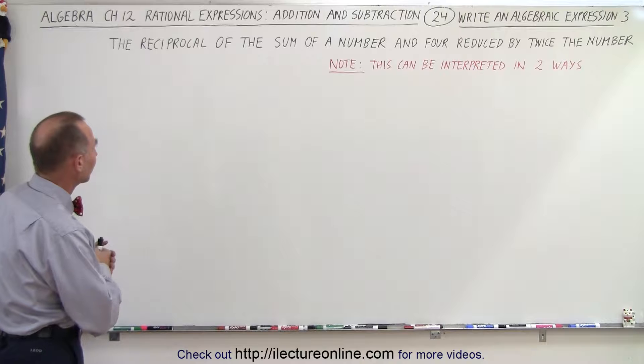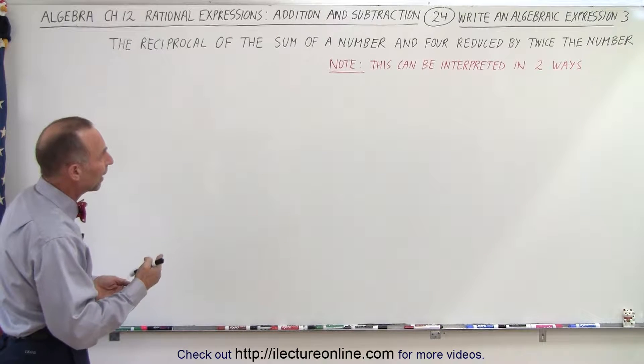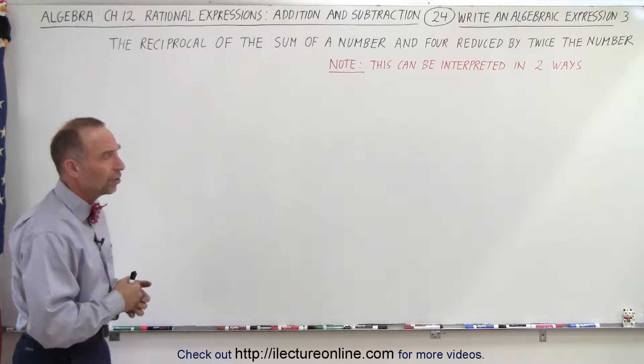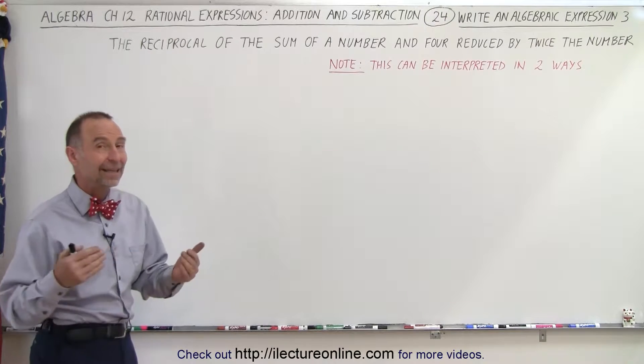In this case we have the following sentence: the reciprocal of the sum of a number and four reduced by twice the number. So how do we interpret that? Well let's take a look.